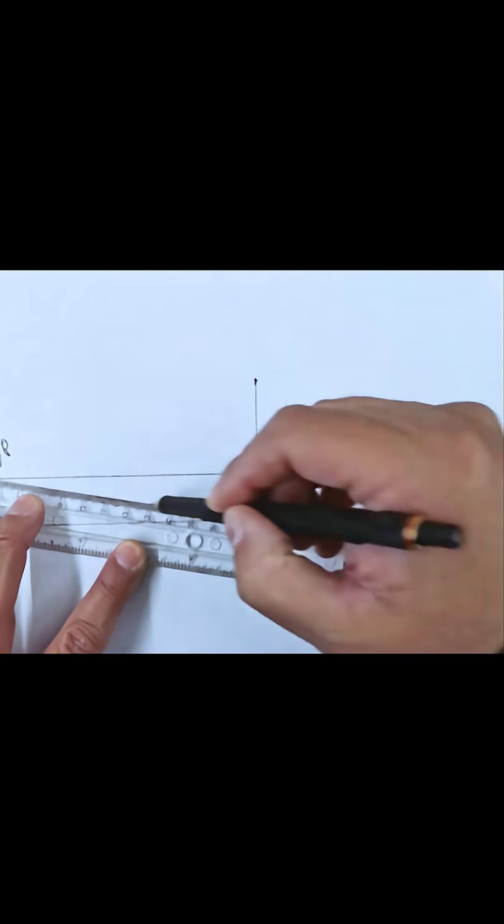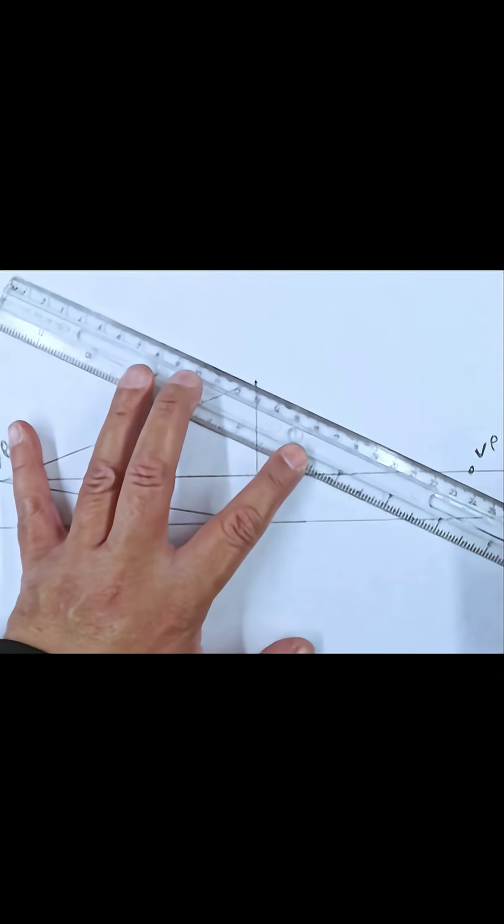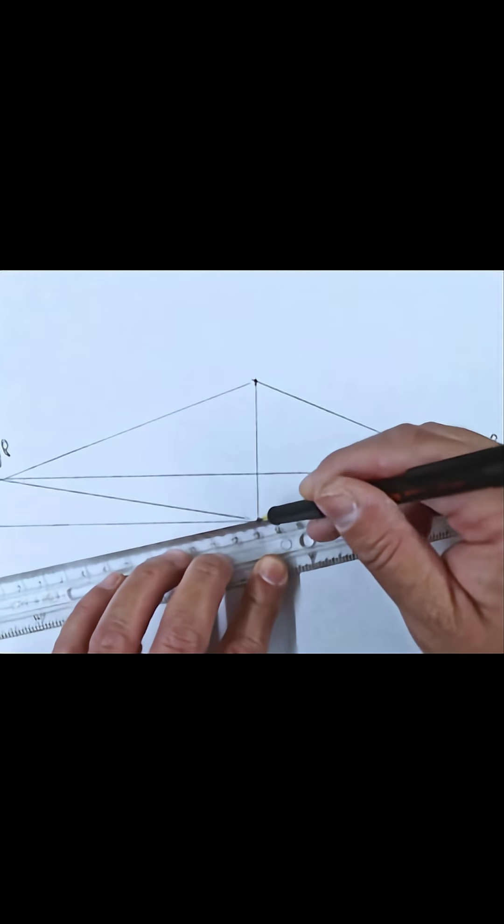Then draw a straight line from the top of the vertical line to each vanishing point. Draw another straight line to each of the vanishing points.